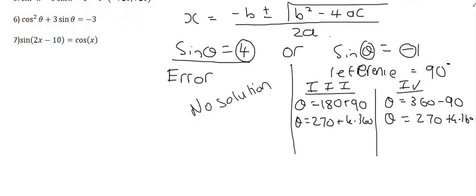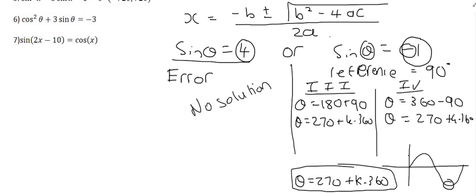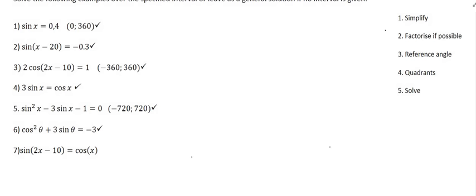Another way to handle that: remember from a previous video, if sin or cos equals 1, minus 1, or 0, you can just look at the graph. If we look at the graph where sin equals minus 1, it's at 270 degrees and repeats every 360 degrees. So all we actually had to do was just write theta equals 270 plus k times 360 as the single answer. If you prefer the two-quadrant method, that's also fine.